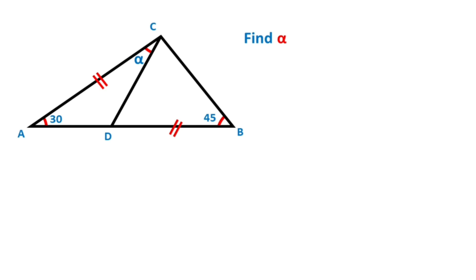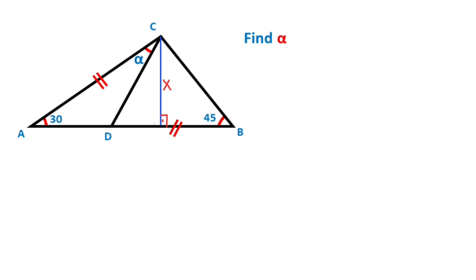First step: notice that we have 30 degrees here. So if we draw a perpendicular opposite the 30 degrees like this — if there is an X unit opposite the 30 degrees, then opposite the 90 degrees must be equal to X.